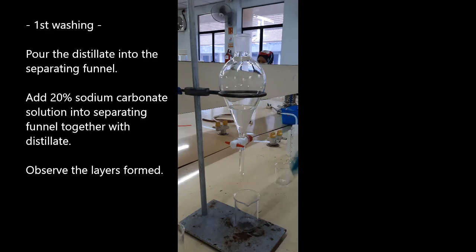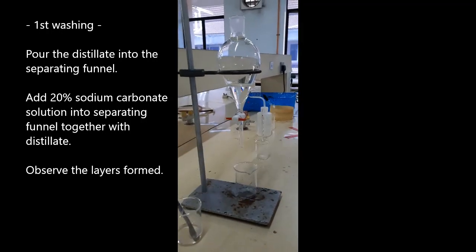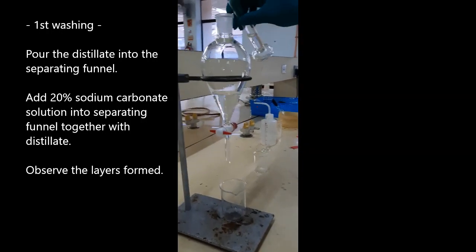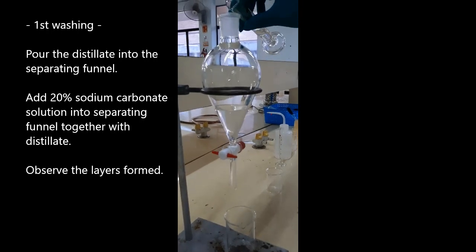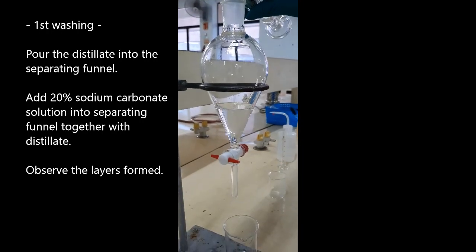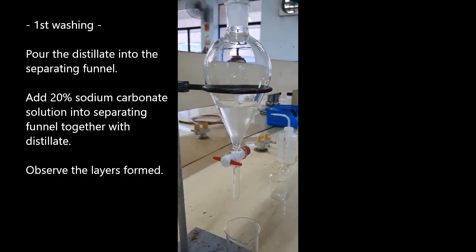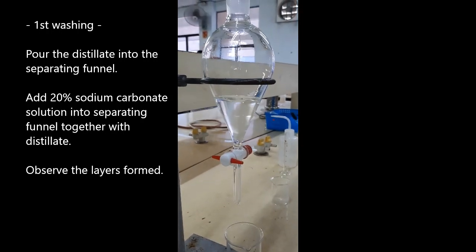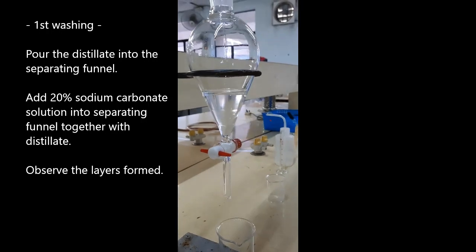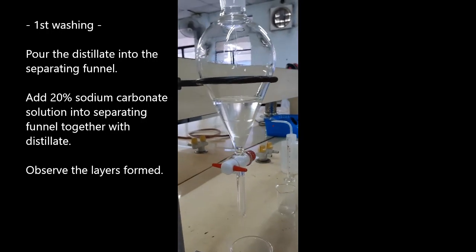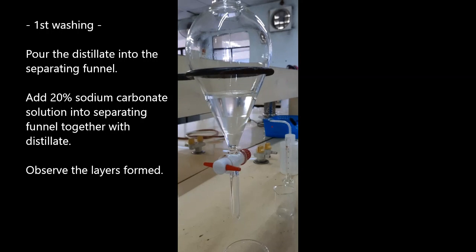For the first washing, carefully pour the distillate into the separating funnel. Add 20% sodium carbonate solution into the separating funnel after the liquid. Observe the liquid layers form.